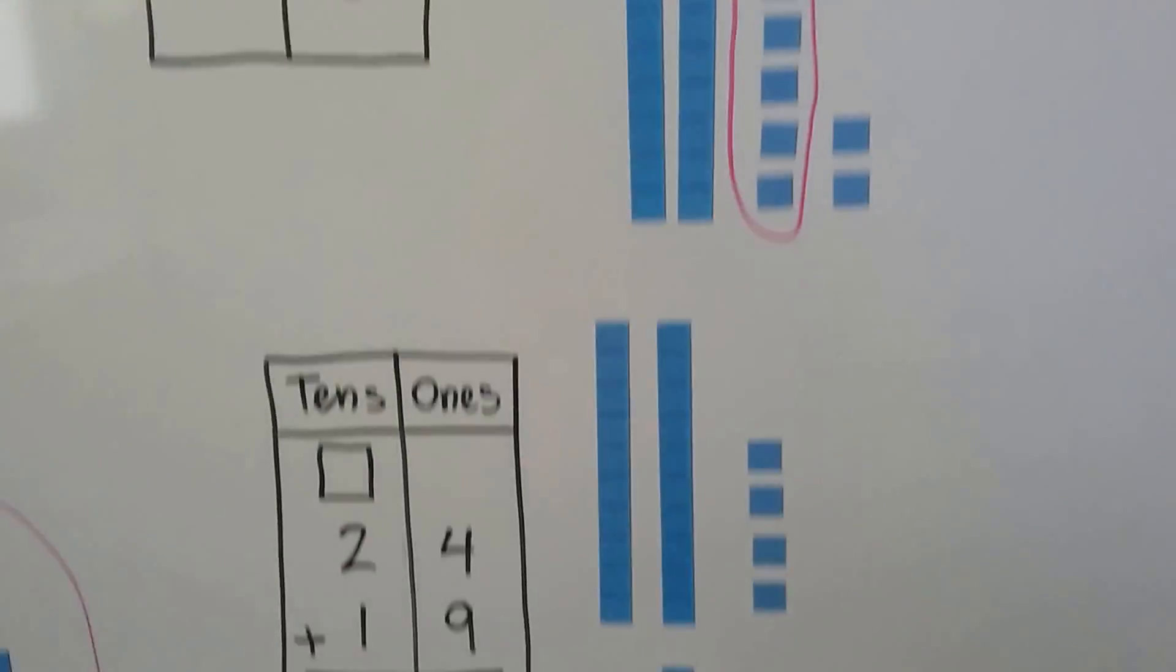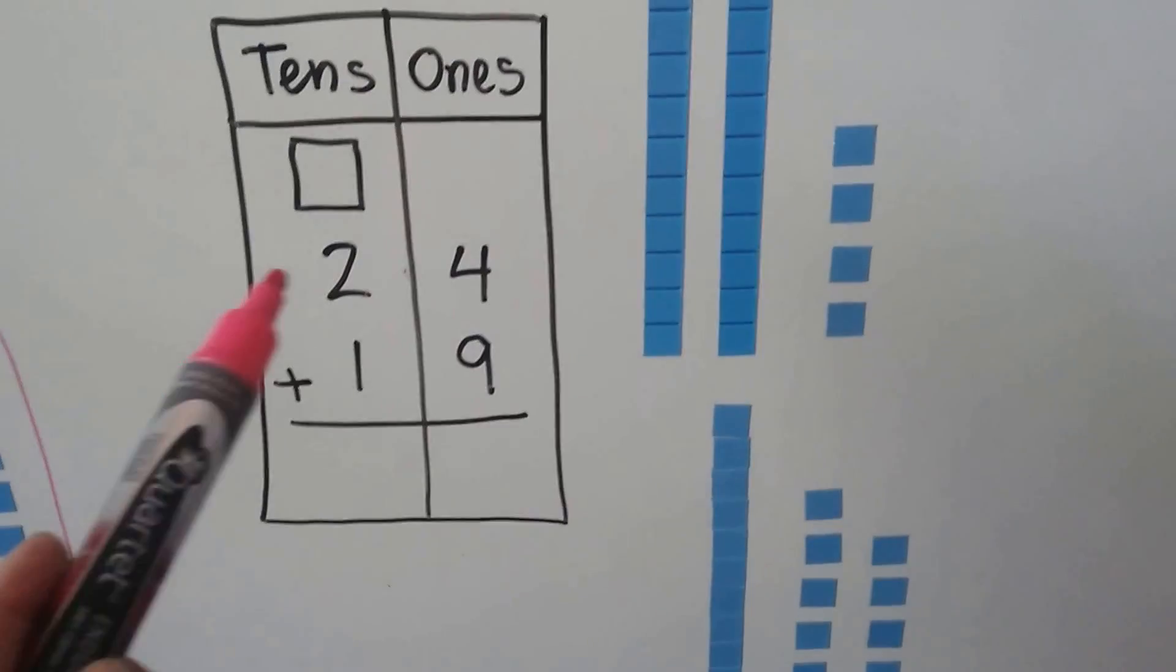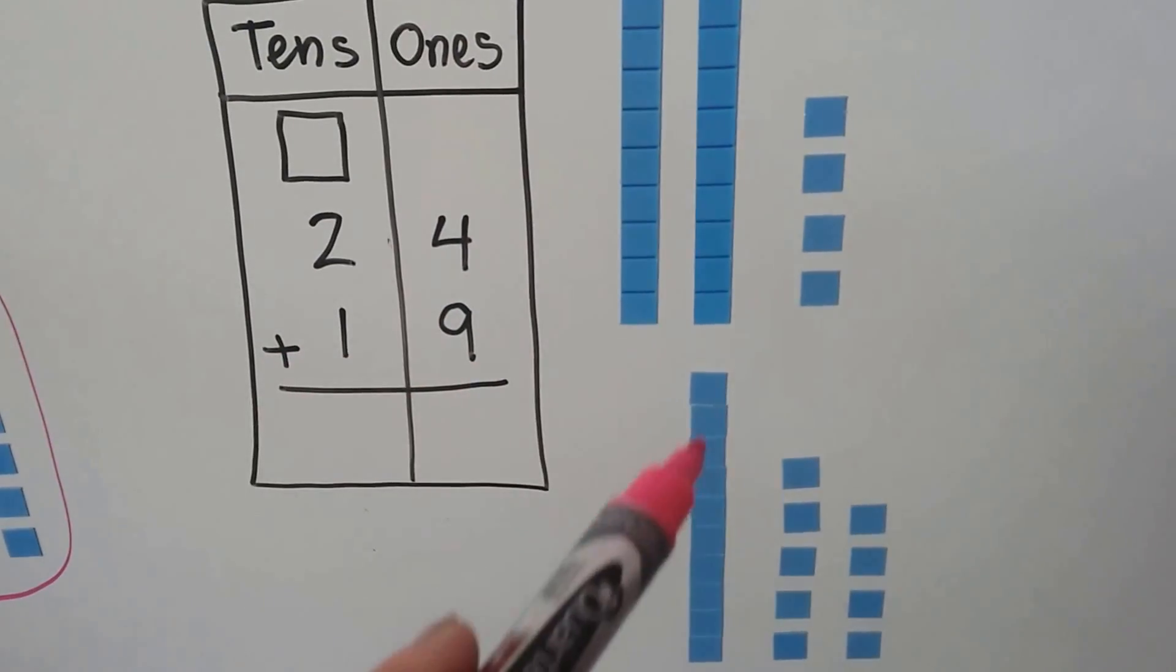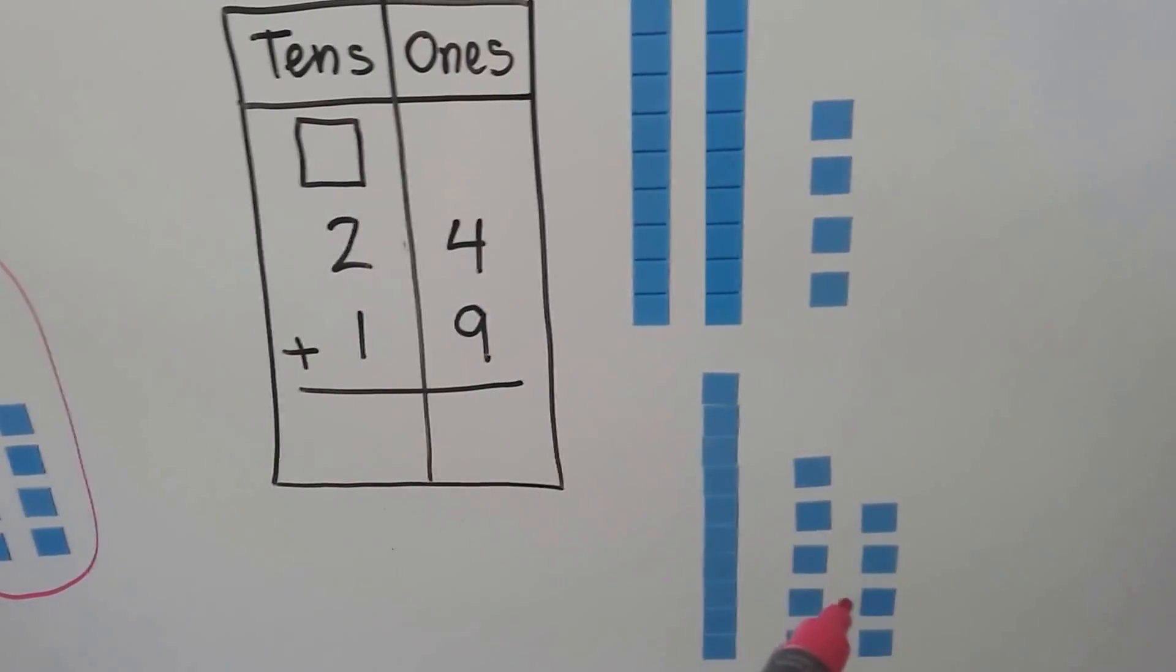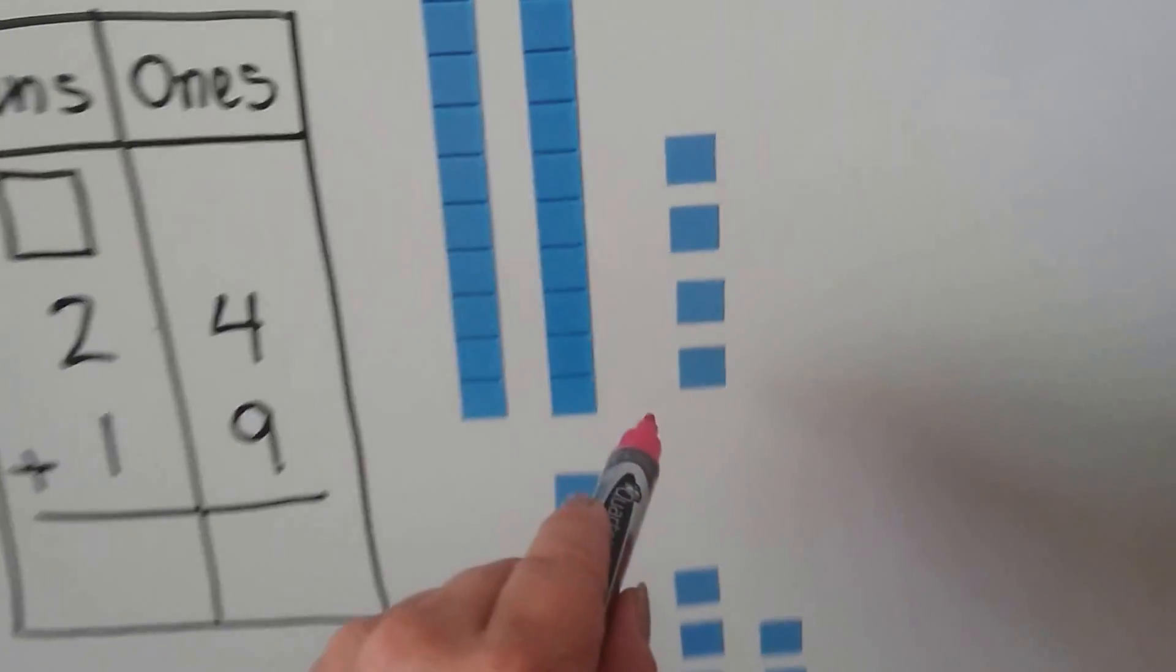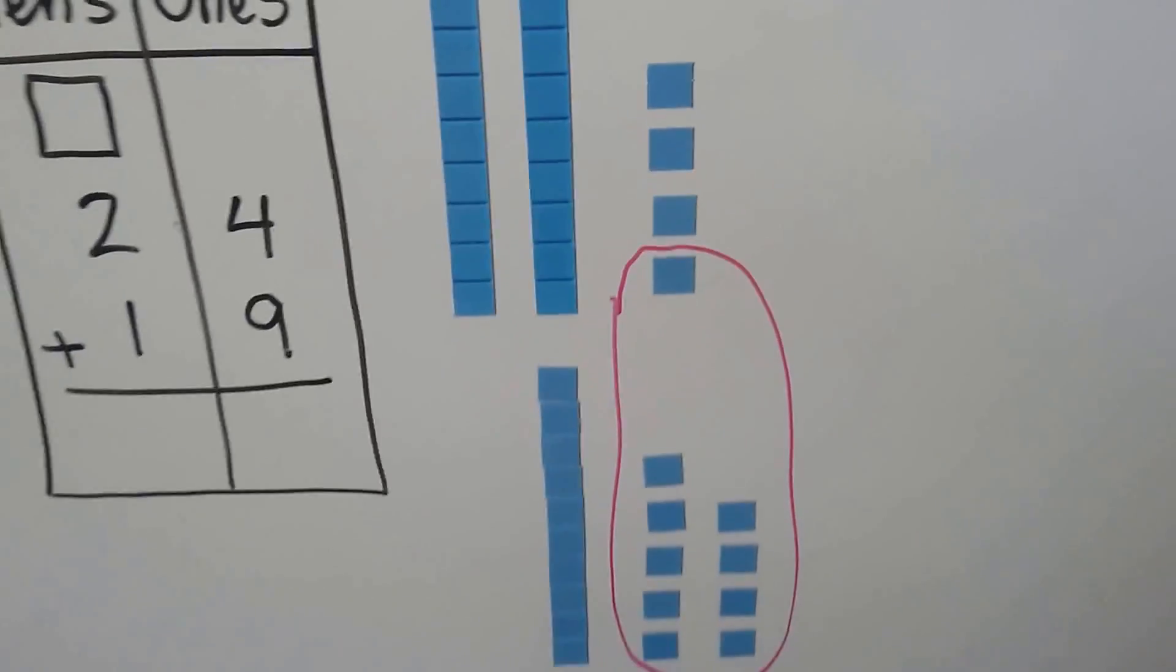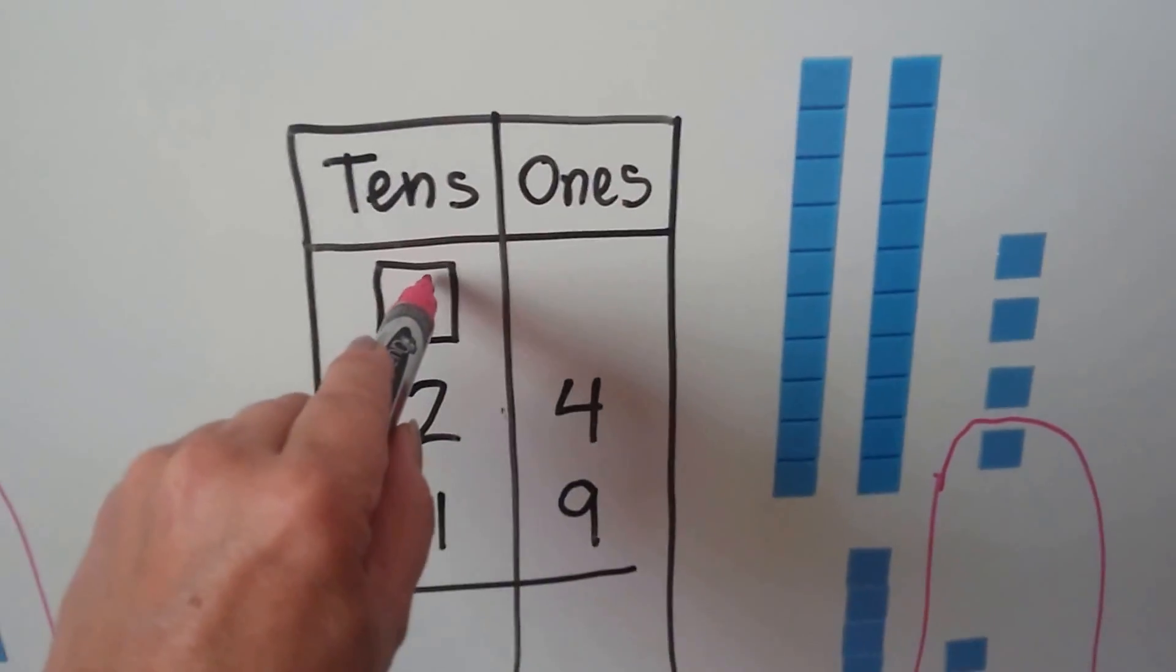Let's try it one more time. We're going to do 24 plus 19. So for 24, we have 2 tens and 4 ones. For 19, we have 1 10 and 9 ones. If we have 9 ones here already, we can just take 1 from here and circle it and group it with the 9.